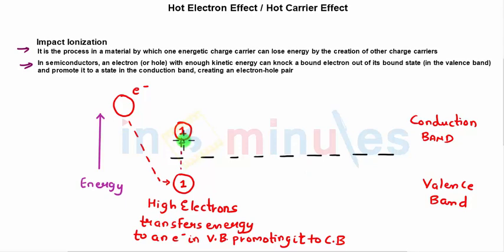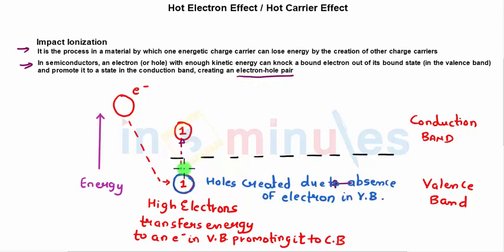This will lead to the absence of electron in the valence band, which is nothing but the presence of a hole. An electron-hole pair is generated. This electron which moved here due to impact ionization from valence band to conduction band leads to an electron-hole pair.